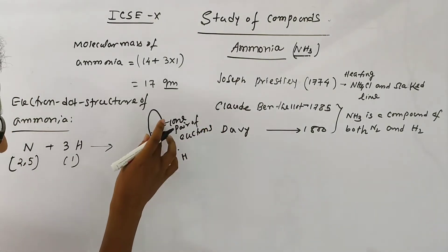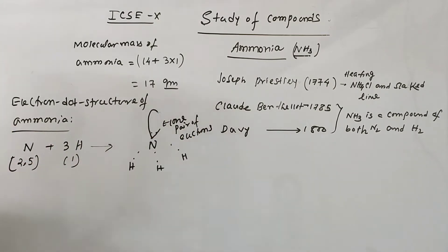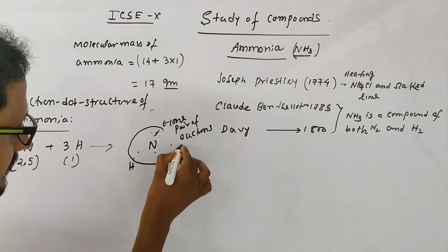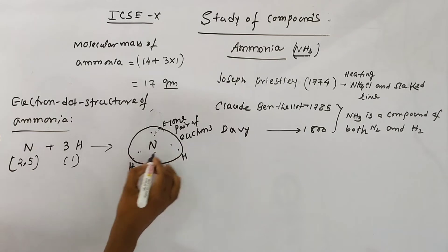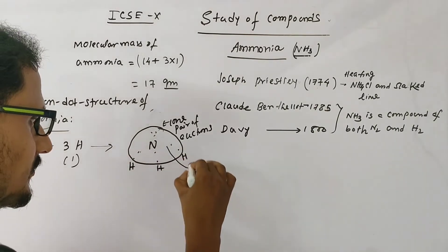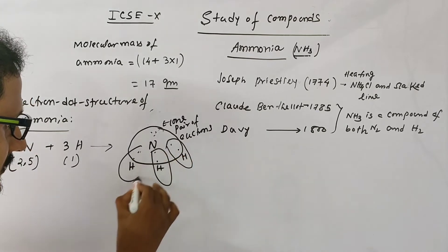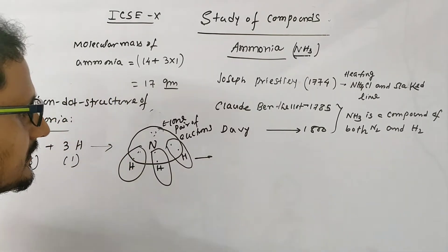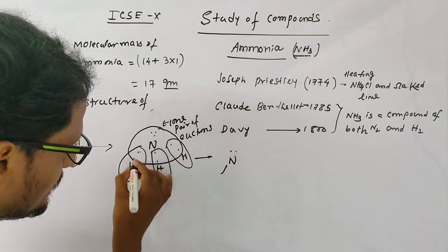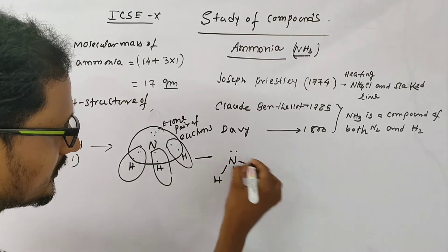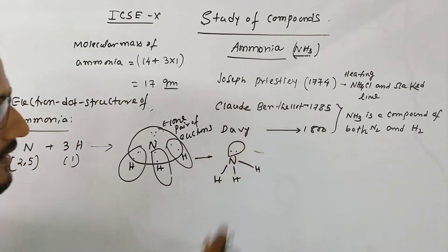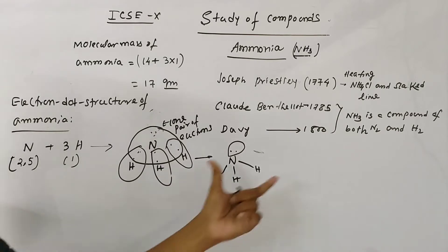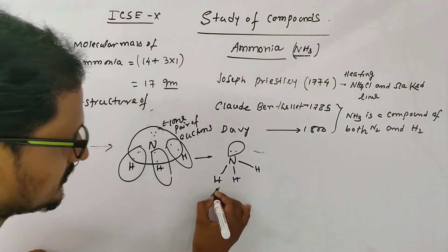Nitrogen tries to achieve eight electrons in its outermost shell. Three of its five outer electrons form single bonds with each hydrogen, and the remaining two electrons exist as a lone pair that does not participate in bonding. So in ammonia, nitrogen forms three single bonds with each hydrogen and has one lone pair of electrons. This is the Lewis dot structure of ammonia.